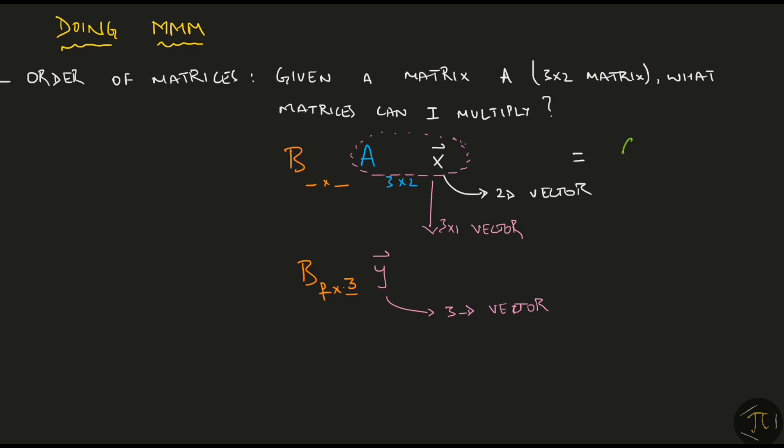Now what will be the order of the equivalent matrix C? It turns out to be p x 2. The p is here because the final vector is going to be a p x 1 vector, and the 2 is here because the input vector is 2D.